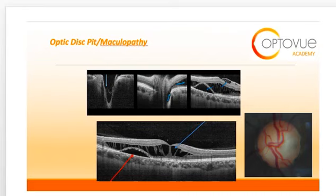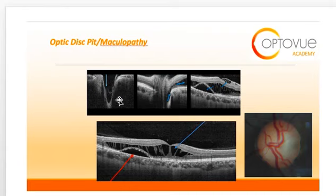The outer retinal layers are often affected, extending from the disc to the macula. On the top three OCTs, the pathophysiology behind optic disc pit maculopathy is illustrated. The pathophysiology is thought to involve fluid originating from the vitreous or subarachnoid space, entering through the optic nerve head, through the pit, resulting in a separation of the outer retinal layers.